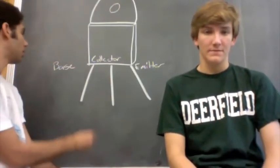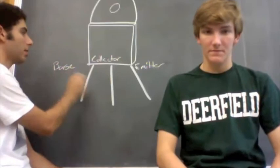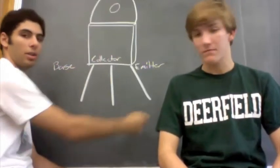So the transistor has three prongs. The one on the far left is called the base. The one in the center is called the collector. The one on the far right is called the emitter.